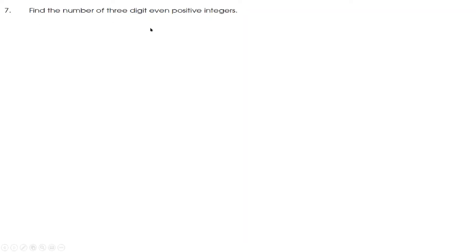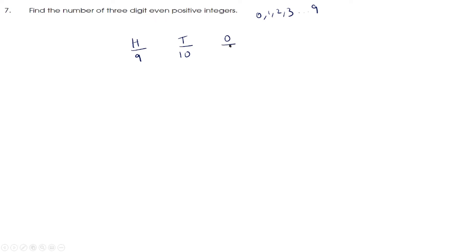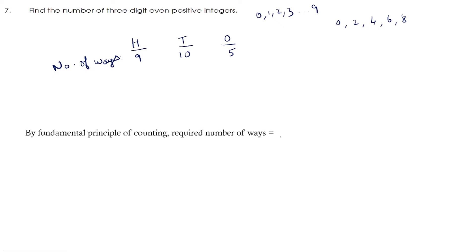Next question: find the number of 3-digit even positive integers. We have the 100's place, the 10's place and the 1's place. The 100's place can be filled using digits 1 through 9, so there are 9 ways. The 10's place can be filled using 10 ways. Since we need even positive integers, the 1's place can be filled with 0, 2, 4, 6, or 8 — that is 5 ways. By the Fundamental Principle of Multiplication, the required number is 9 into 10 into 5, which is 450.